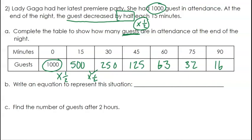Now we're going to write an equation to represent the situation. So again, we're going to do y equals a times b to the power of x. Reminder, a is that initial value. So it's that number that we started with. It's that 1,000.